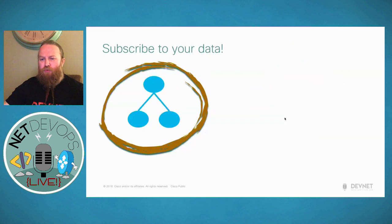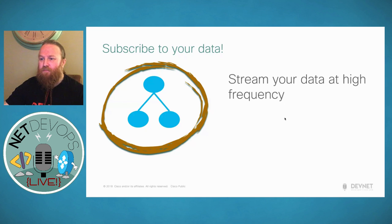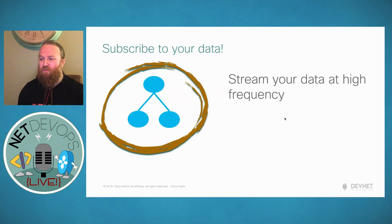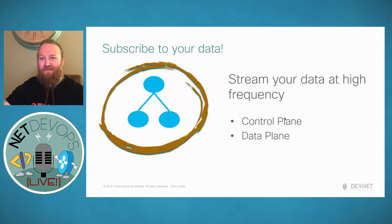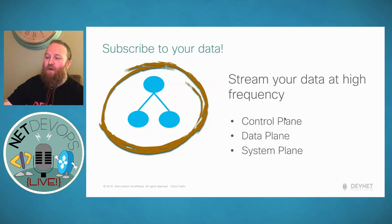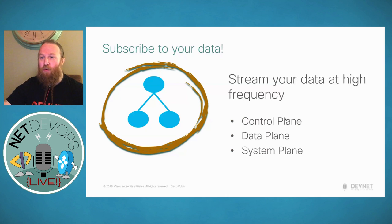With streaming telemetry, you subscribe to your data and can stream it at high frequency. We're able to stream data from our device, giving us a much deeper granular insight into what's actually happening within our networks and systems. And not only that — we can stream data from the control plane, the data plane, and even the system plane. For a lot of the time we weren't really able to access a lot of this data; it was a very monolithic view of what we were seeing.